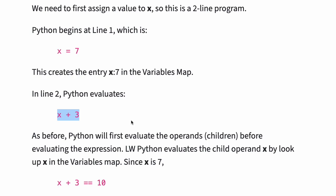LWPython evaluates the child operand x by looking up x in the variables map. Since x is 7, x plus 3 equals 10.